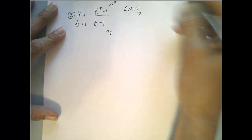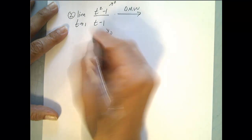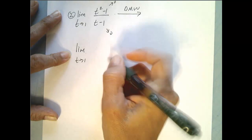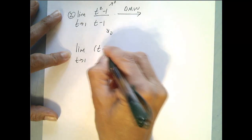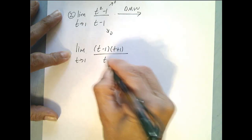And let's try the method of factoring again. We notice the top is the difference of two squares. So this factors to, so the limit as t goes to 1, the top is t minus 1 times t plus 1, and the bottom is still t minus 1.